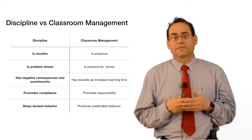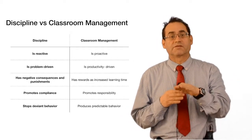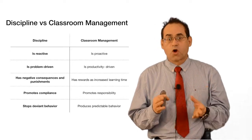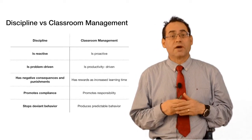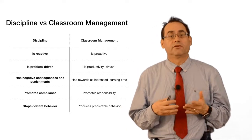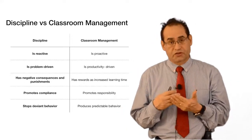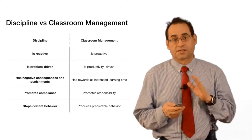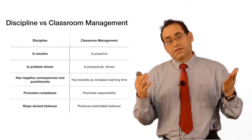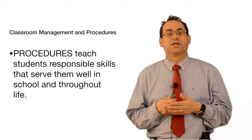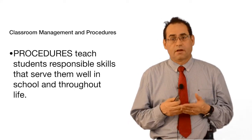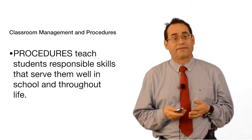Discipline stops the violent behavior just for a moment, while classroom management produces predictable behavior — you expect something from your students based on the procedures you set up for them. To close: procedures teach students responsible skills that serve them well in school and throughout life.